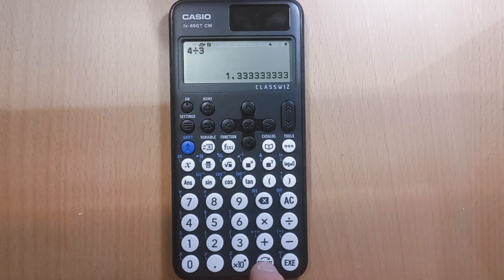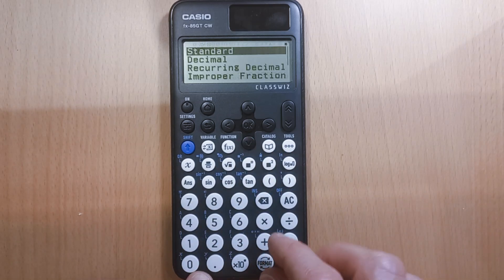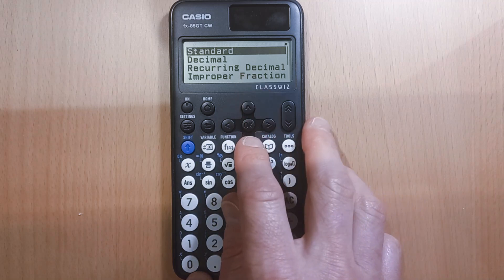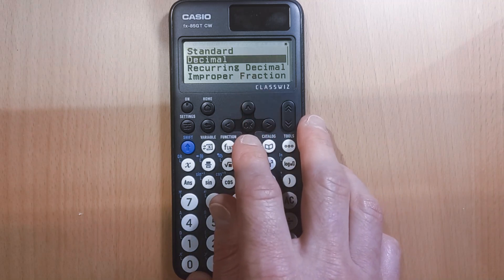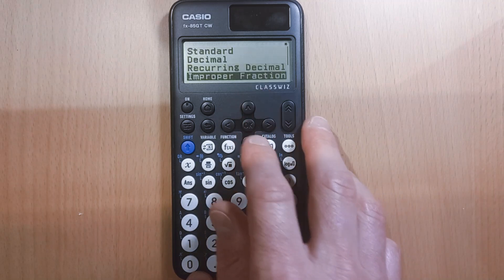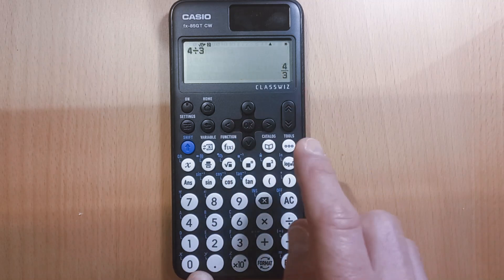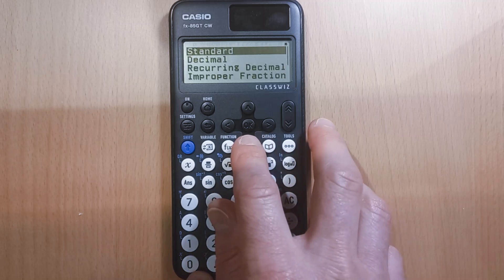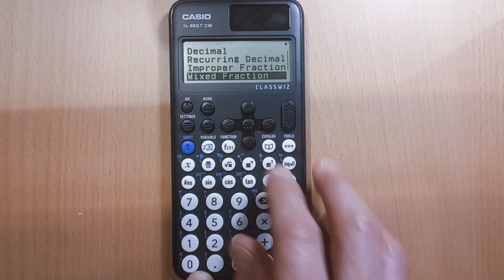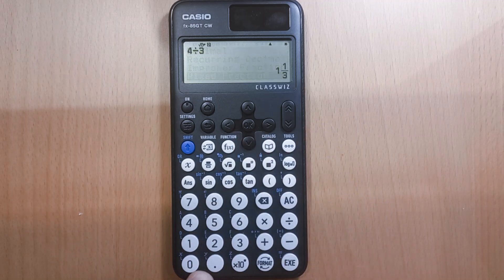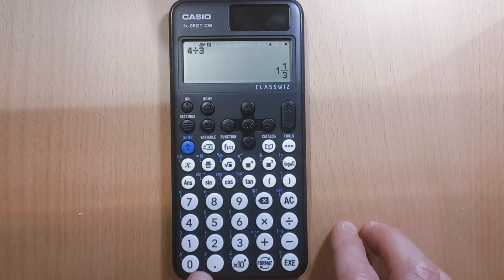So again, if we click format, we've got standard—the standard would be the fraction we've just seen. The decimal one, you can go down to improper fraction, so that's going to have it as 4 over 3. Or if you keep going down, you've got mixed fraction as well, which you might find useful because that's showing it as one and one-third.